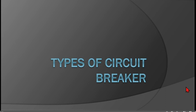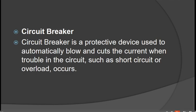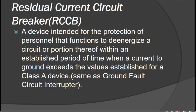Now we will go to the types of breakers. First, we have the definition of a circuit breaker. A circuit breaker is a protective device used to automatically blow or cut the current when a fault such as a short circuit or overload occurs in the circuit.